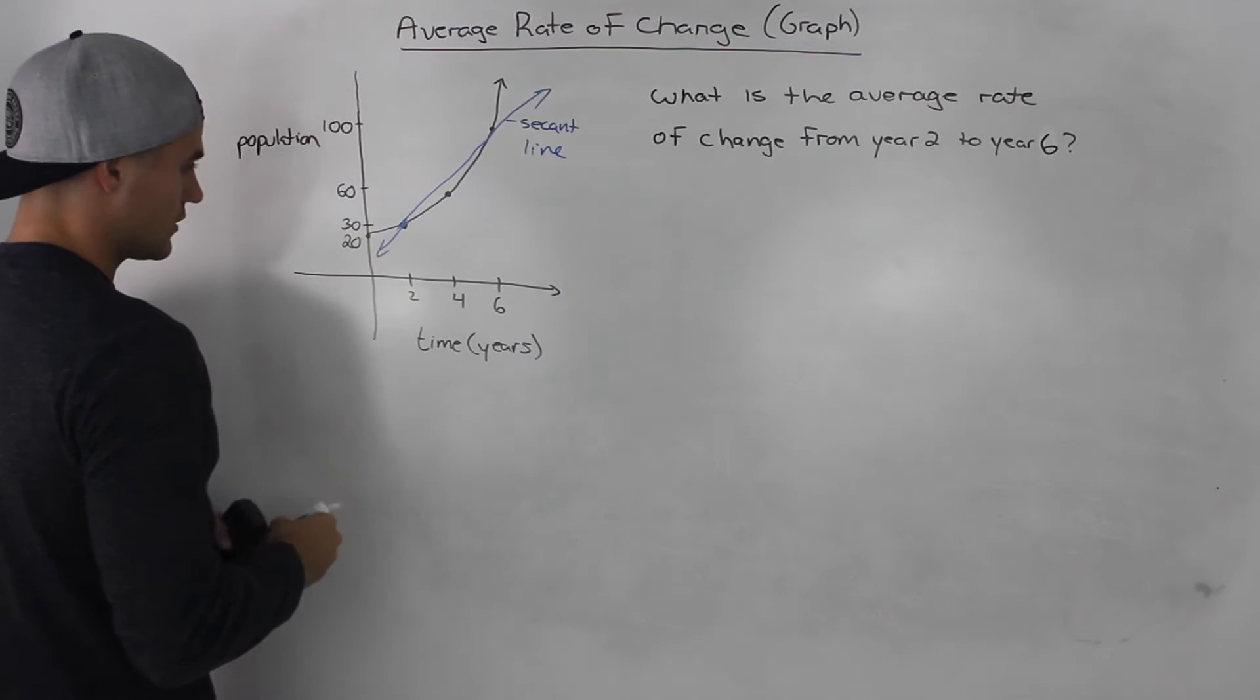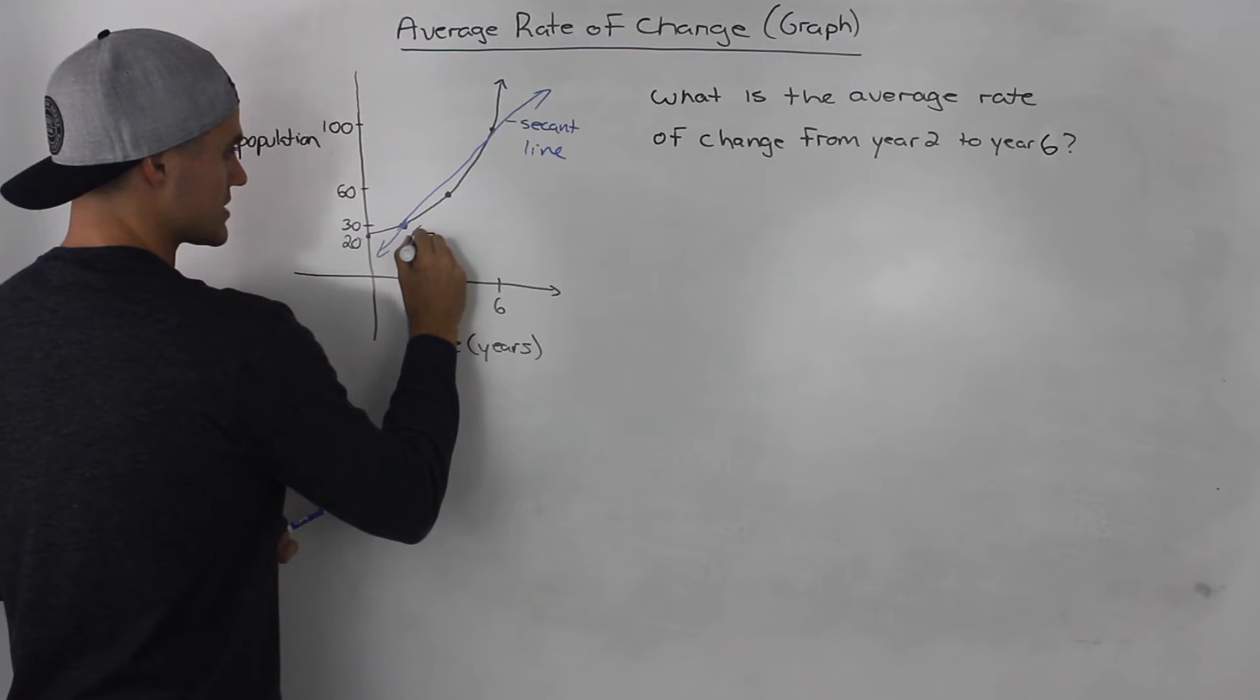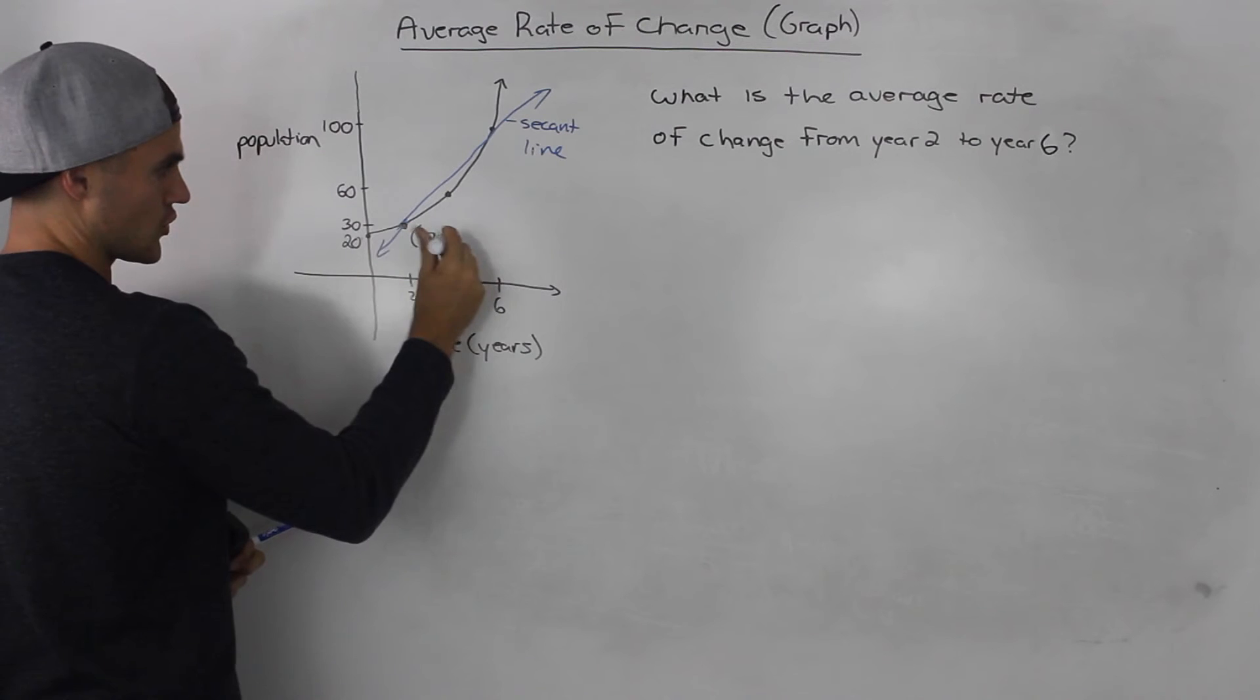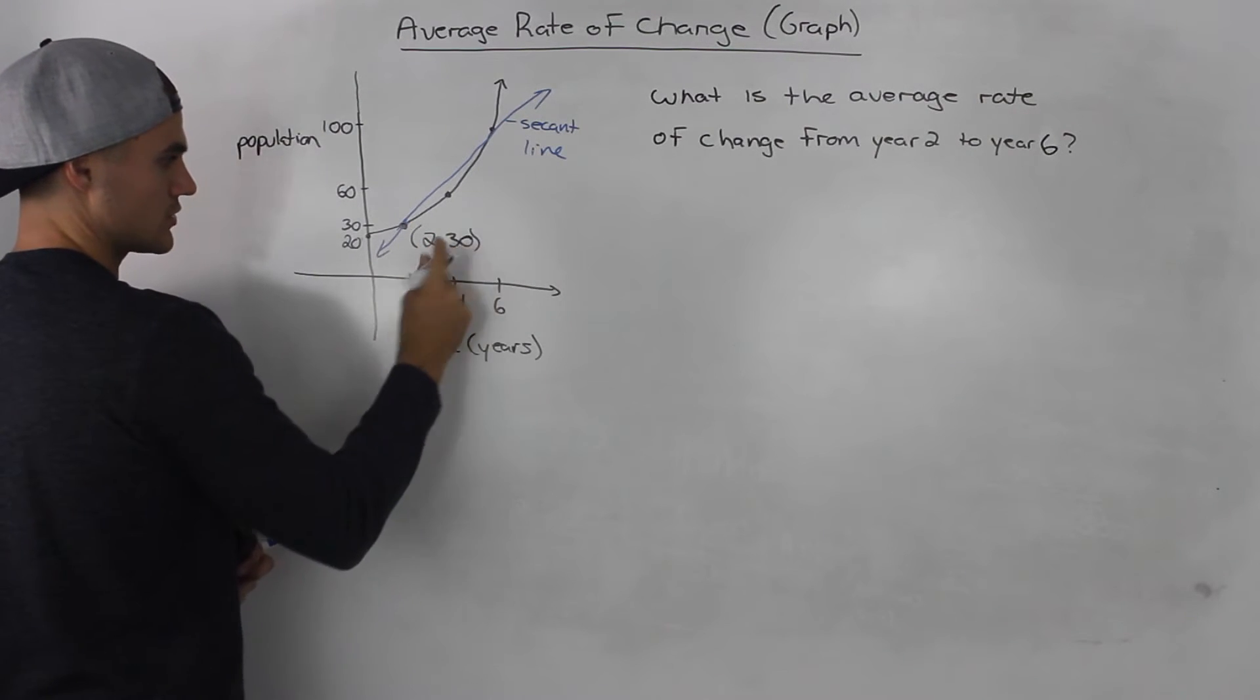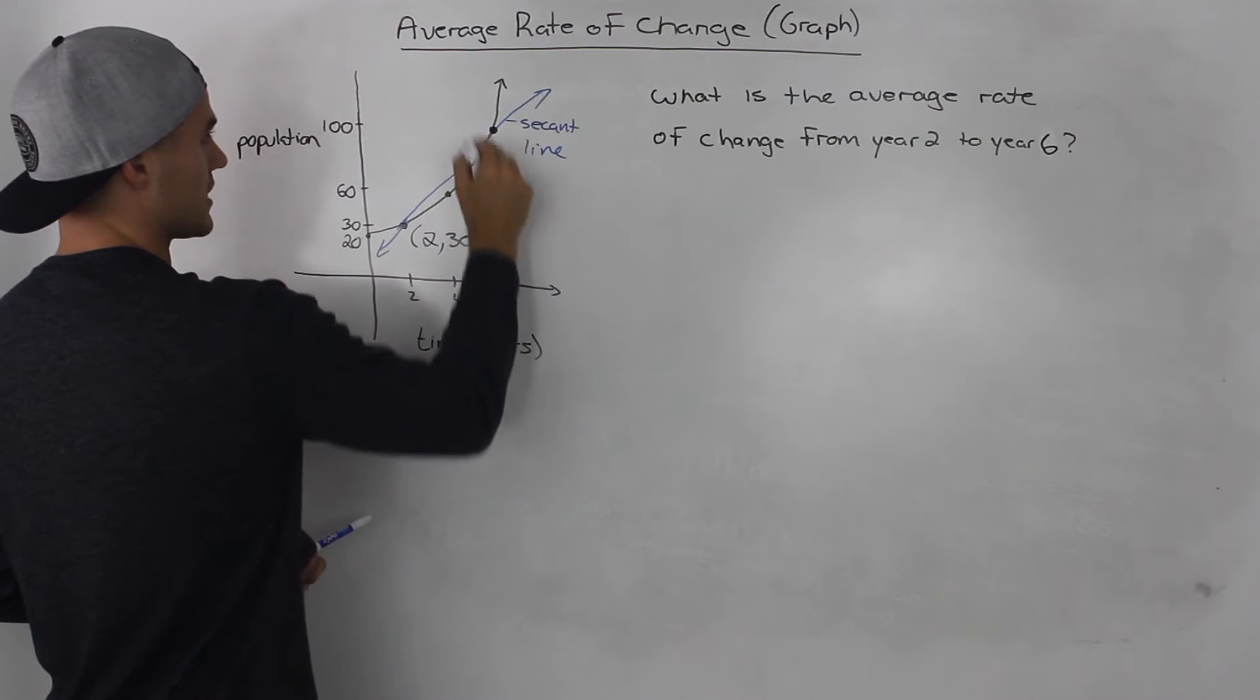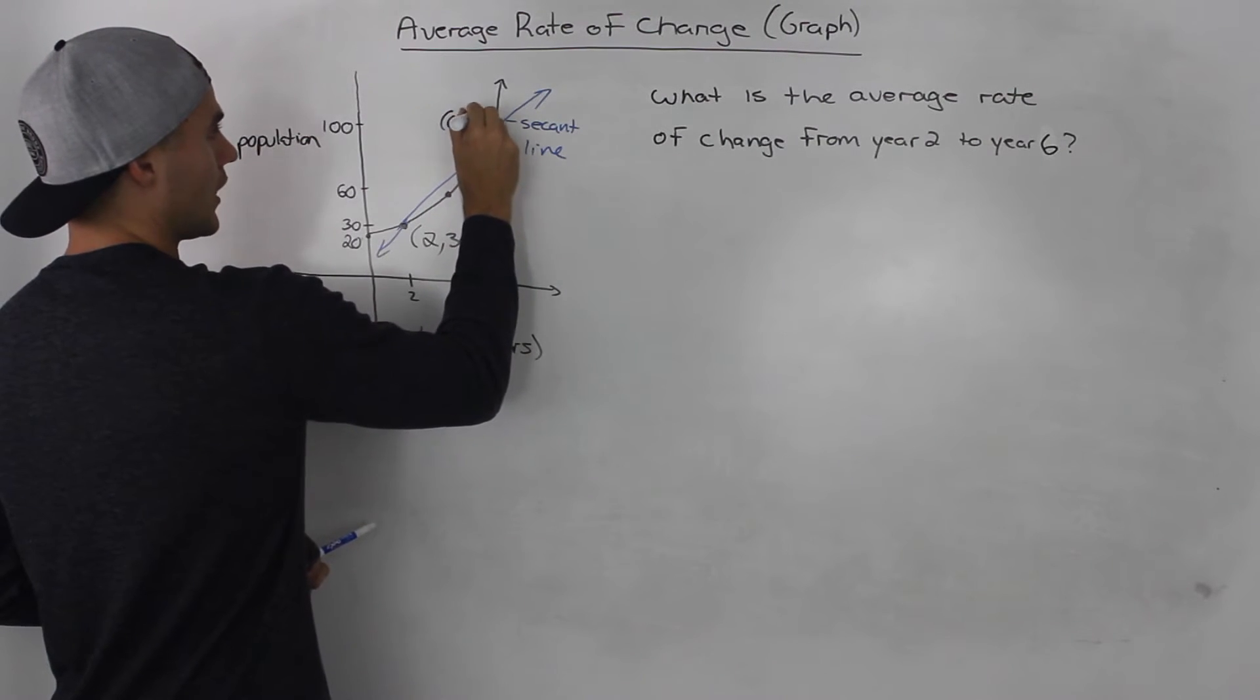And at year 2, what is the population? What is the y-value of this coordinate? Well, it's 30. So at year 2 the population is 30, and then here at year 6 the population is 100.